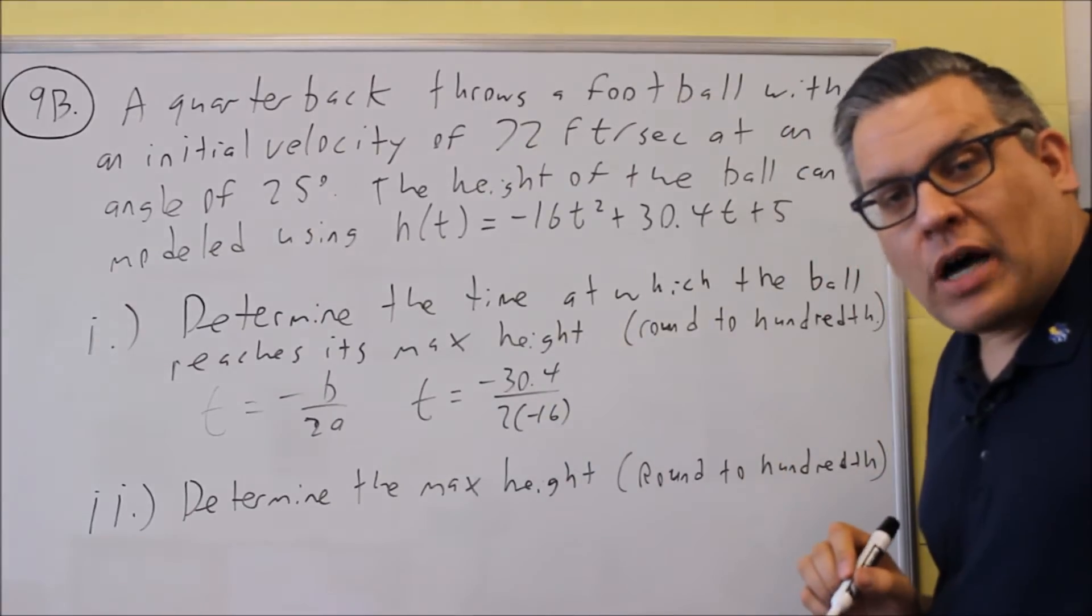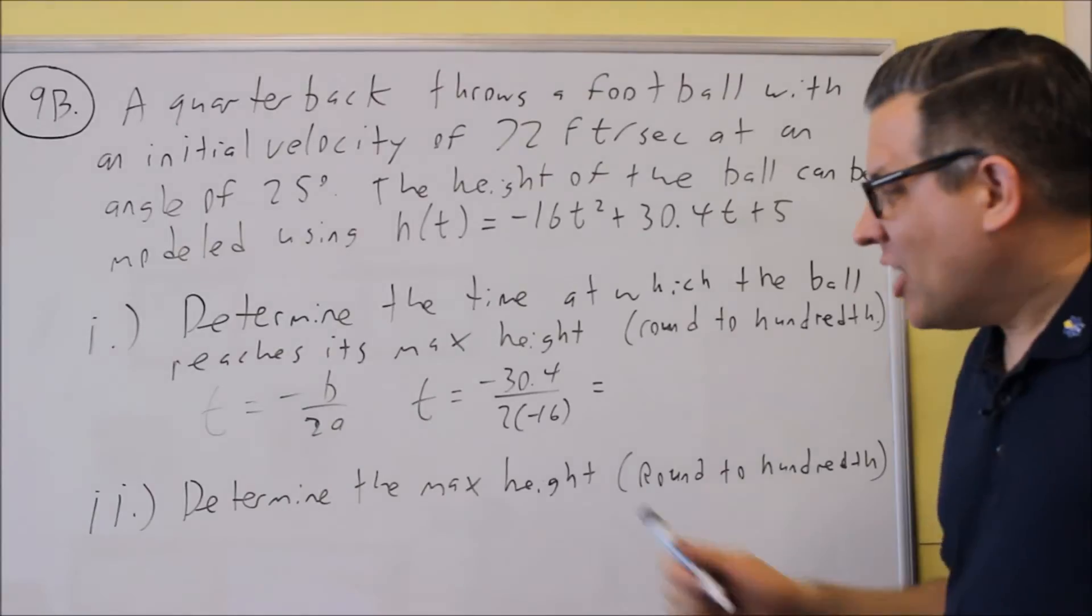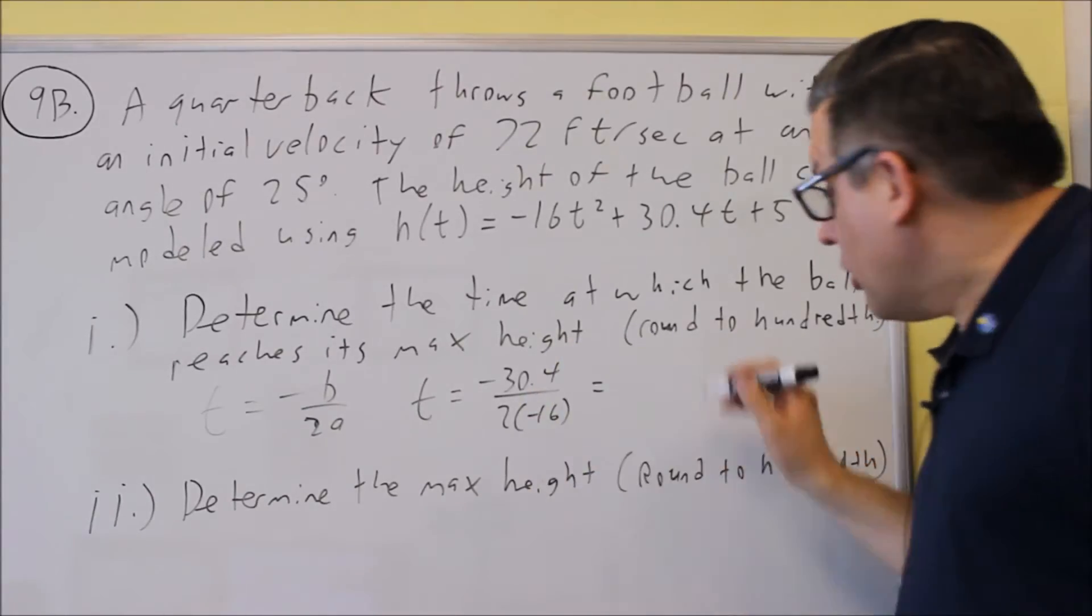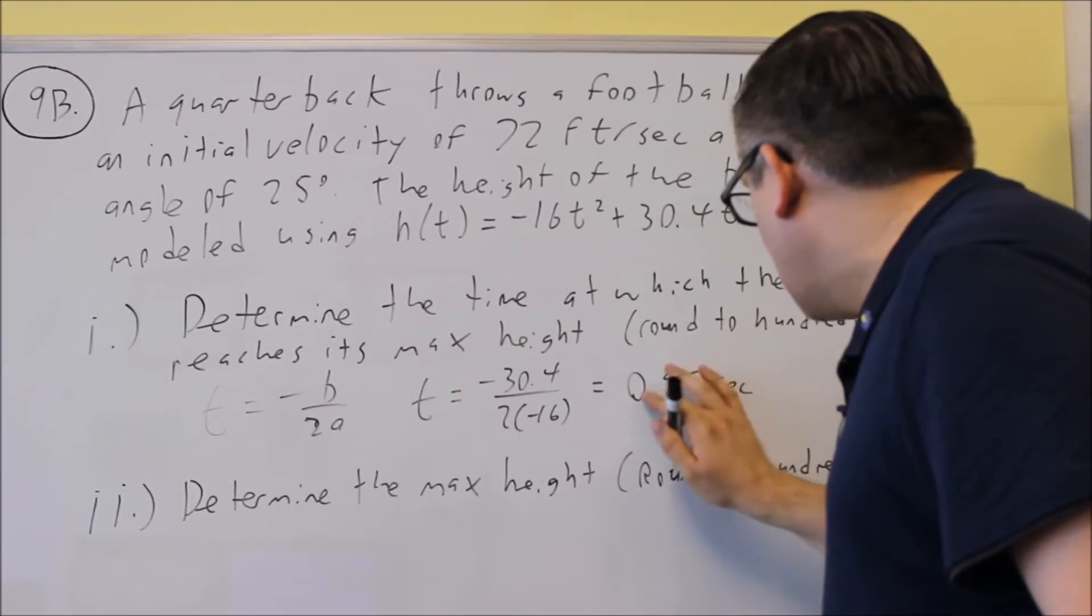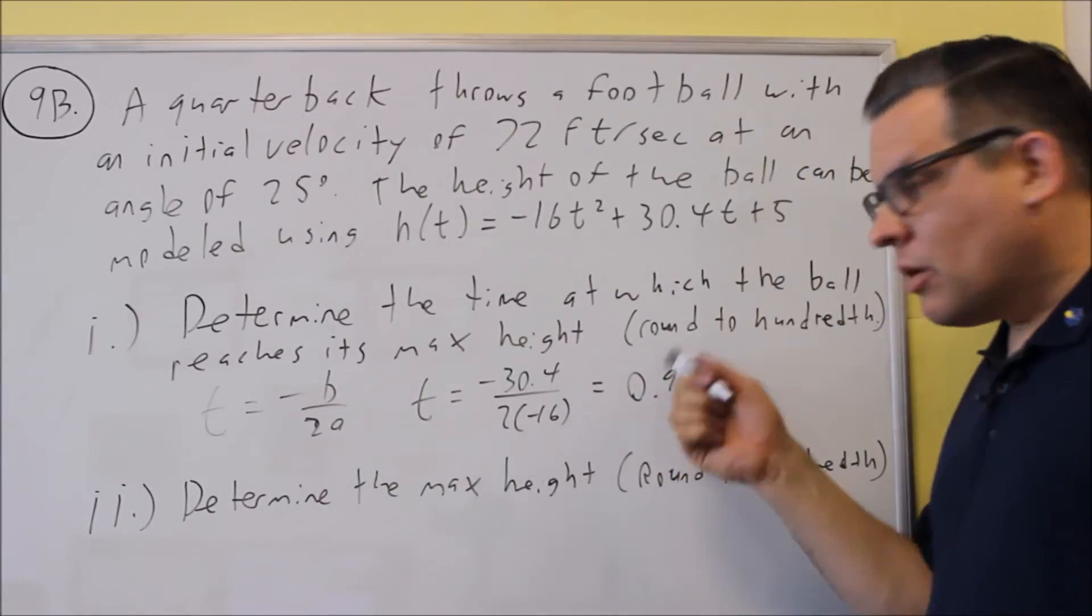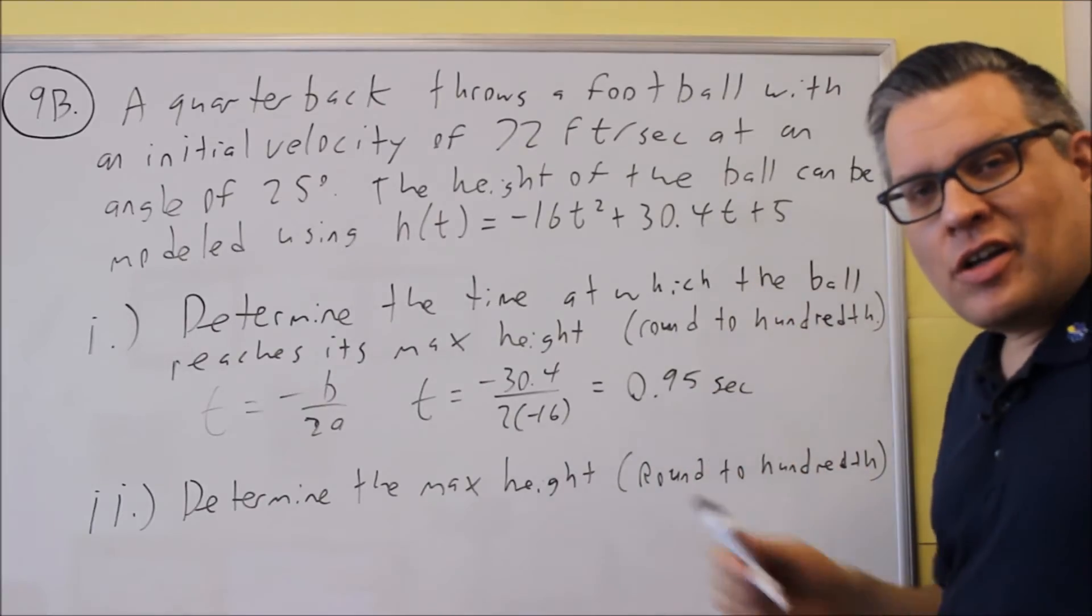The negatives are going to cancel. We'll get a positive number as a result, which we should get for something like this. And if you divide that in your calculator, you'll get 0.95 seconds. So that would be the first part. That's the time at which it's going to reach its maximum height.